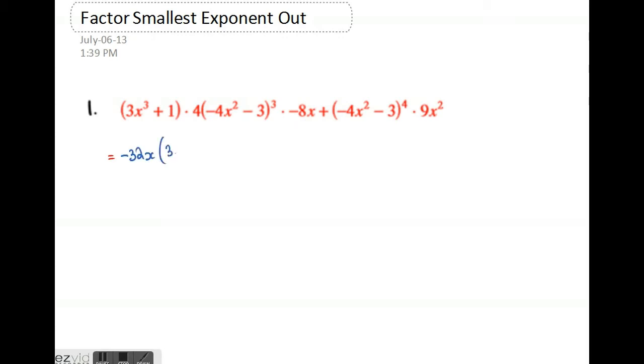Then the binomial bracket 3x cubed plus 1 and negative 4x squared minus 3 with the power of 3. Plus, I like to put the monomial in front of the binomials, so we have this expression that we need to pull out the greatest common factor.